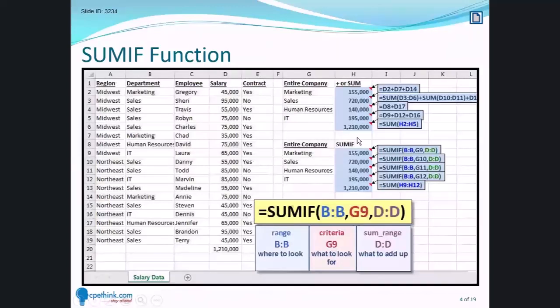Conversely, the SUMIF function has three arguments. First argument is the range argument, so that's where to look. Notice in this case I've future-proofed the SUMIF by leaving out the row numbers. I didn't say B1 through B19, which I could have. I said B colon B, so I'm referencing the entire column. If I add more data I don't have to go circle back and rewrite that formula. The criteria is what we're looking for, so we're looking for the marketing department.